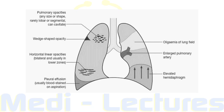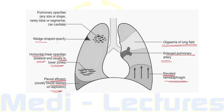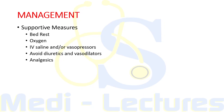Other chest X-ray signs of pulmonary embolism beyond Palla's and Westermark signs include oligemia of the lung field, enlarged pulmonary artery, elevation of the hemidiaphragm on that side, pleural effusion usually blood-stained on aspiration, horizontal linear opacities — typically bilateral in the lower zones — wedge-shaped opacity, and pulmonary opacities of any size or shape, rarely lobar or segmental, which can also cavitate.